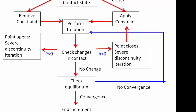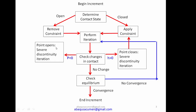The contact logic for Abaqus Standard starts with 'begin increment.' It determines the contact status — whether any node is getting into contact, not in contact, or open. There are two states: node is open or node is closed. If a node is open, Abaqus removes the constraint on it; if something is getting close, it applies a constraint. Then it performs a severe discontinued iteration.